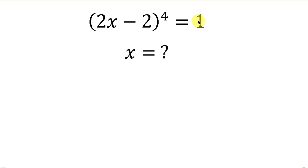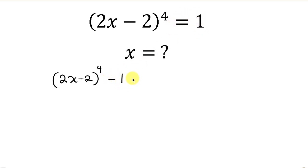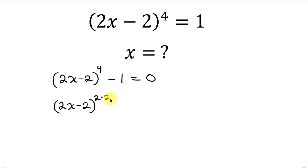Our first step will be to move 1 to the left-hand side. So we have (2x minus 2) all raised to the 4th, and as 1 crosses to the left it becomes minus 1, and this is equal to 0. This simplifies into (2x minus 2) to the 4th minus 1 equal to 0, which is the same as (2x minus 2) squared times 2 minus 1 equal to 0.